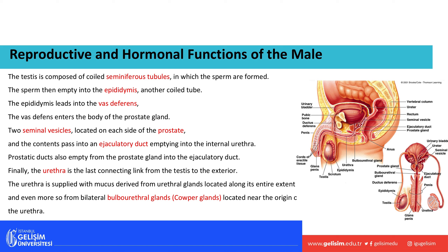The vas deferens passes through the prostate gland. The seminal vesicles are located on both sides of the prostate gland and release fluids. The prostate gland also releases fluids. Semen is a combination of sperm cells and all the fluids produced by the male reproductive tract — from the seminal vesicles, prostate gland, and other glands.